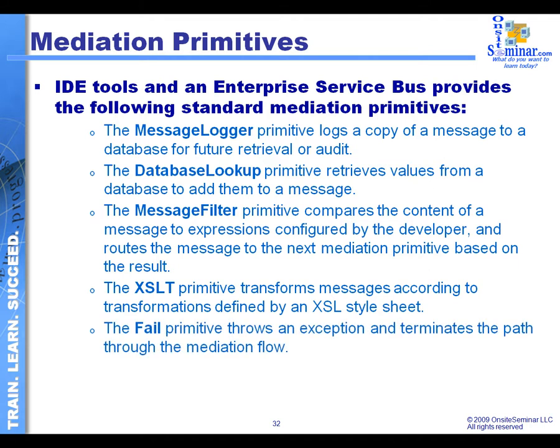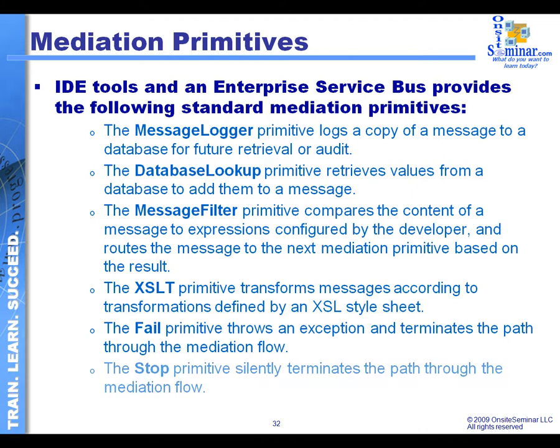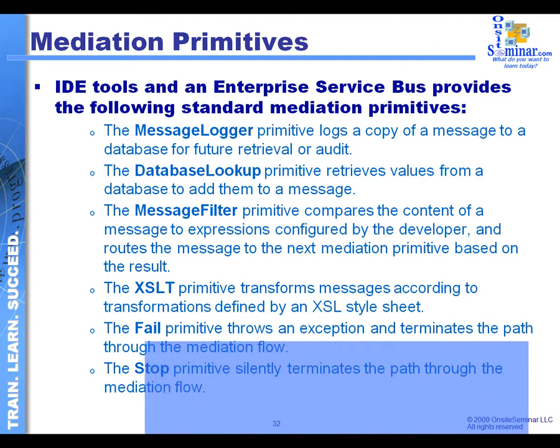There's a failed primitive that just throws exceptions. So somewhere in my message flow, if I get some type of an error, I can use this simple primitive to throw some type of an exception back. And then there's a stopped primitive that basically just terminates everything — so if we get a situation where I can't recover from some type of an error, I can use this primitive to completely stop the processing.